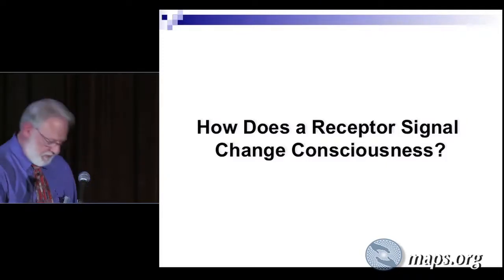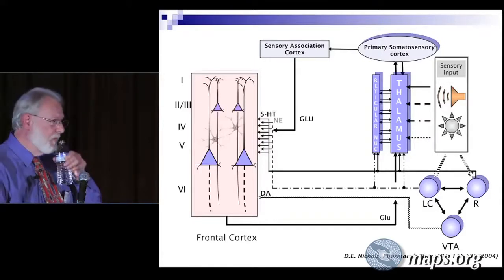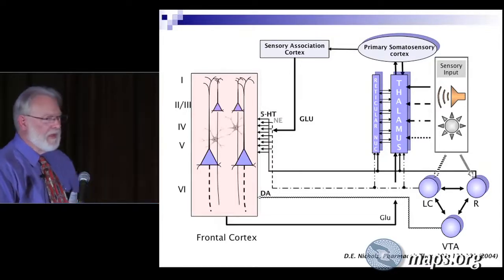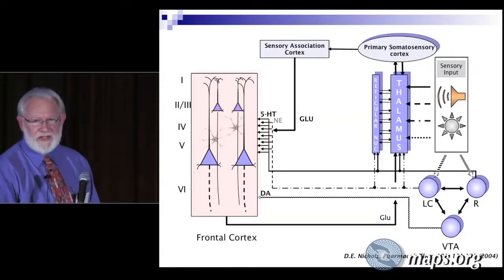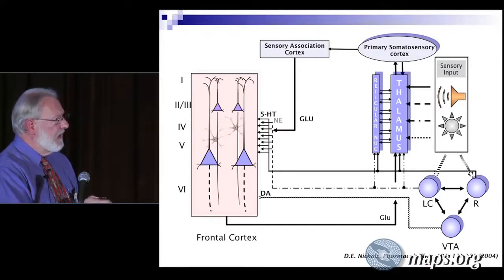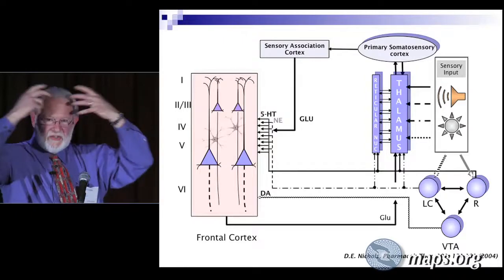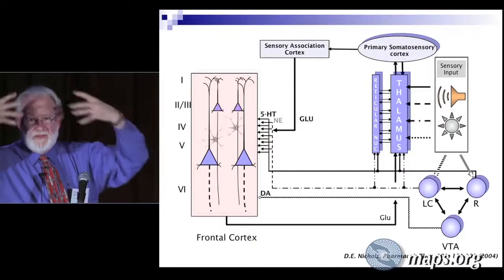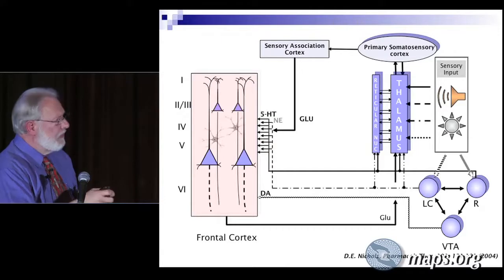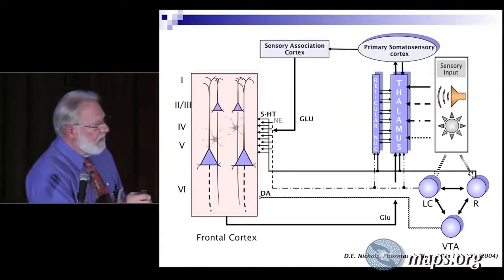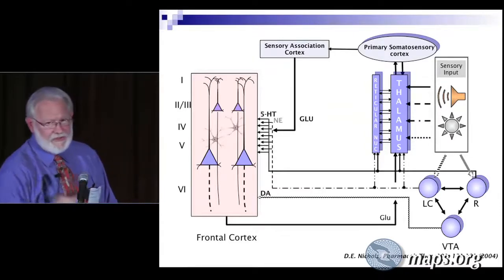How does a receptor signal change consciousness? I'm going to tell you how I think it could. The serotonin 2A receptors are located on the apical dendrites of pyramidal cells — the major computational units in the cortex. The frontal cortex is where we make sense of the world, where we make executive decisions, where our reality is put together. There are also inhibitory interneurons that couple these together, which also have serotonin 2A receptors.